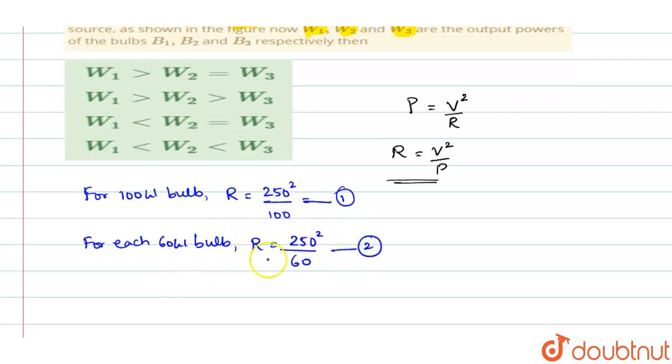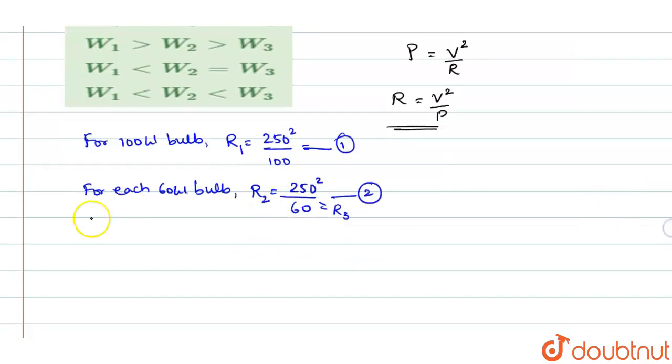Now, to find the output power, if I call this as R1, this as R2, R2 and R3. It will be same as R3 also. We will find out the output power. These are the resistances. To find output power, we shall write output power W1 for the first bulb as I square into R. And here, R is in place of R, we will write it as R1.